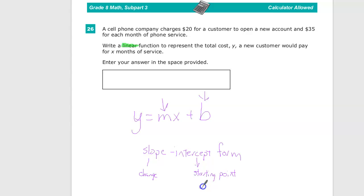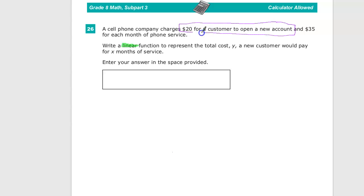Or, in this case, an upfront fee. Now, I just need to find out what parts are there. The cell phone company has $20 to open a new account. There isn't some sort of, you open your account one time.